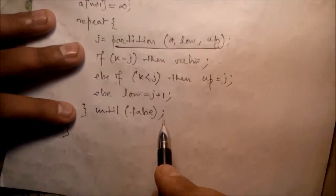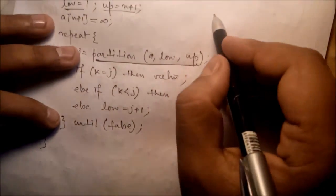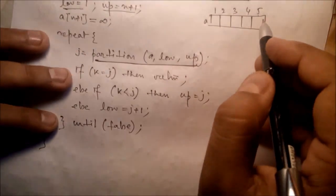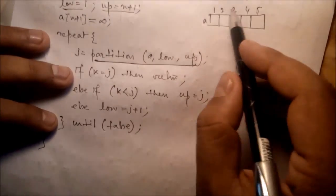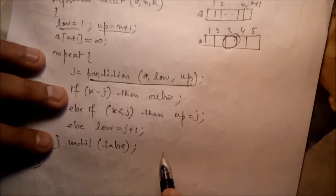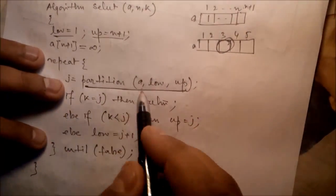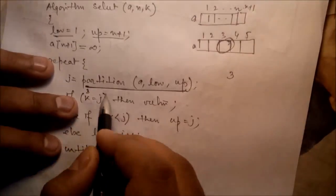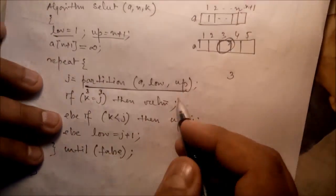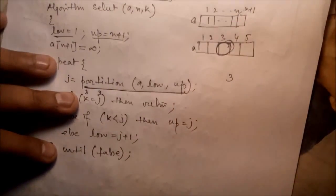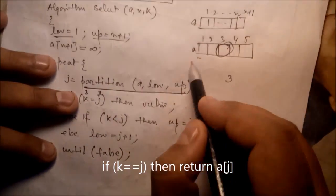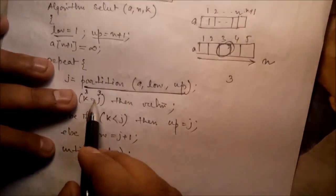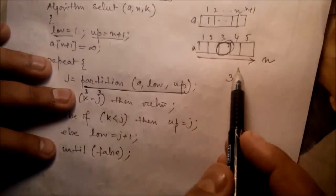The partition step picks the pivot (first value) and identifies its final sorted position. With array size 1 to 5, the median position K is (1+5)/2 = 3. If the partition algorithm returns position j and j equals K, bingo — you have found the median value. The partition algorithm scans the data once in O(n) time.